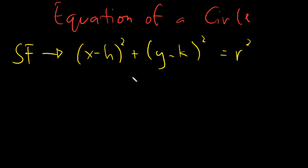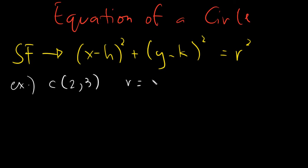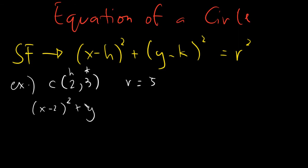In our previous video, you were given the center and the radius and asked to find the equation of the circle. It's actually quite easy because you just simply need to substitute the values. For example, we have center at (2, 3) and radius equal to 5. You will have x minus 2 squared plus y minus 3 squared is equal to 25, because that is 5 squared.